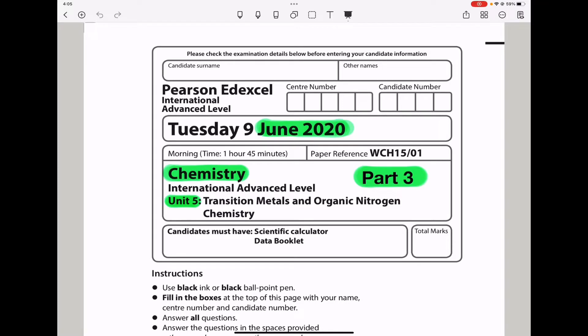Welcome to the Chemistry, Biology, and Math Revision Hub. Today we are doing the Pearson Edexcel International A-Level Chemistry Unit 5 for June 2020. This is the Part 3 video. I'll put the link to the Part 1 and Part 2 videos below in the description box. Let us begin.